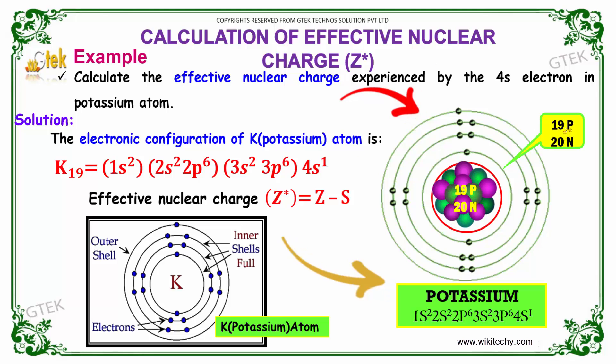Potassium has 19 protons and 20 neutrons. I want to calculate the effective nuclear charge. Can we calculate using Slater's rule? Let's move on.